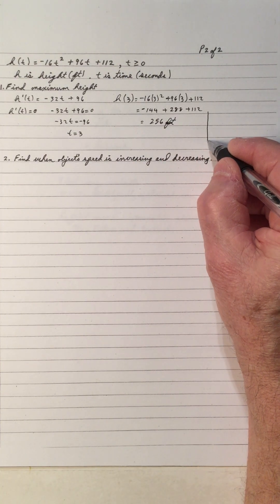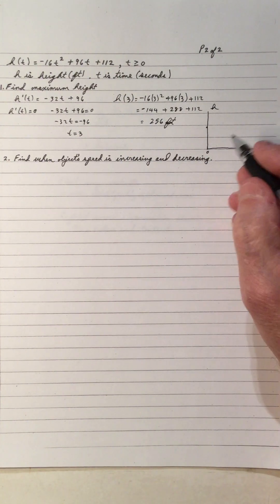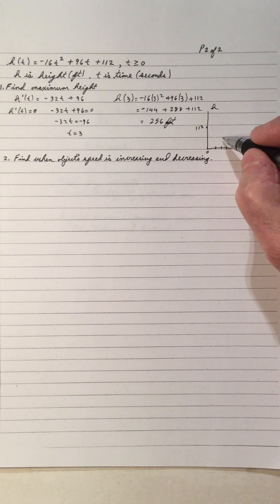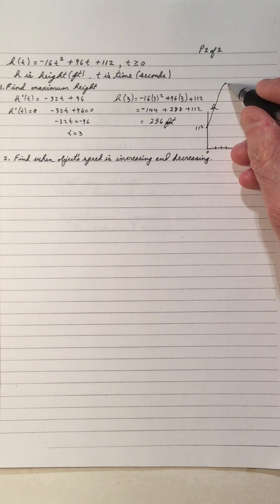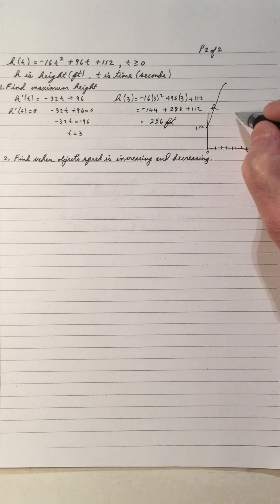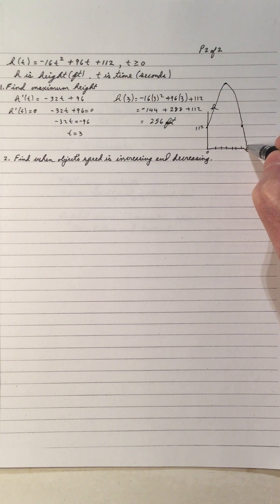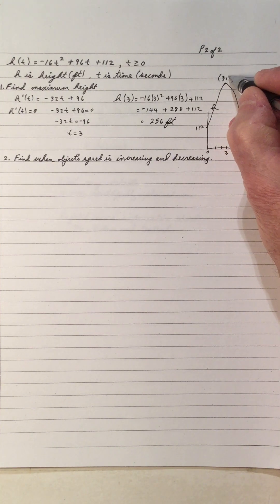Just to visualize this a bit more: when t is zero, we get a height of 112. So on a graph with t on the horizontal axis and h on the vertical, the object starts at height 112, goes up, reaches maximum at the point (3, 256), then comes back down and continues until it hits the ground. It takes three seconds to get up, and three seconds to come back down to the same height.